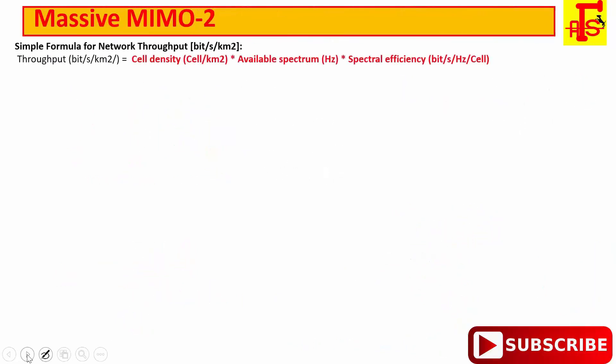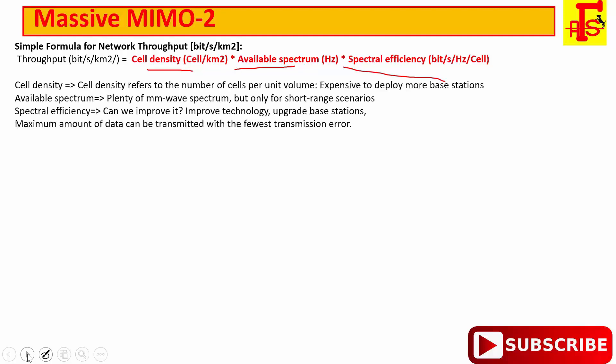Here is the simple formula to calculate the network throughput. Throughput depends on this parameter, this factor: cell density, available spectrum, spectral efficiency. If we are going to increase demand data, we have this different factor to increase the throughput.